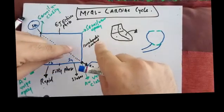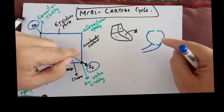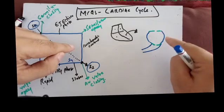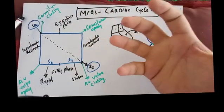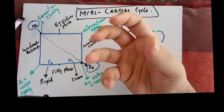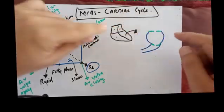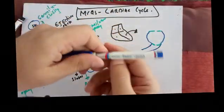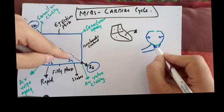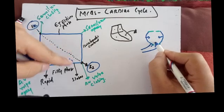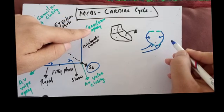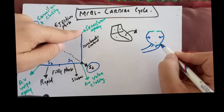During isovolumetric contraction, no blood is coming in and no blood is leaving, so the volume of blood inside the heart is constant. The ventricle is contracting, increasing the pressure inside. When pressure goes up, it opens the aortic valve. On the left side it is the aortic valve, and on the right side it is the pulmonic valve.